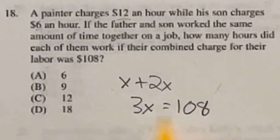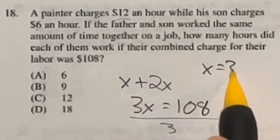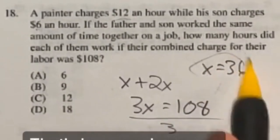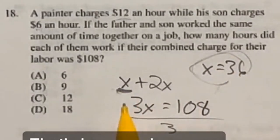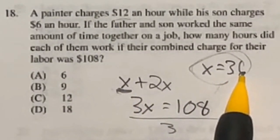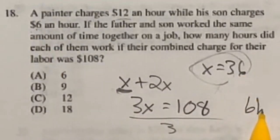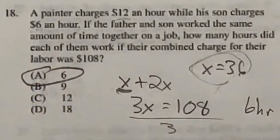Now, if I do divide both sides by that 3, it's going to end up giving me that X is equal to 36. That's how much money the son is making, because he was the 1X. So if he's making a total of $36, that means, divide that by 6, he worked a total of 6 hours, which means the father also worked 6 hours. So our answer here is A.